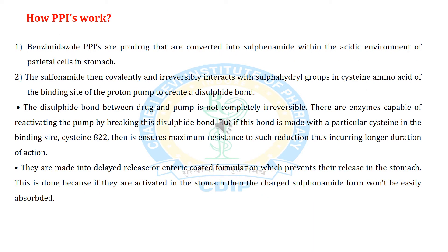How does this proton pump inhibitor work? The benzimidazole PPI prodrug is converted to a sulfenamide within the acidic environment of parietal cells in the stomach. The sulfenamide then covalently interacts with the sulfhydryl group of the cysteine amino acid at the binding site of the proton pump to create a disulfide bond. There are enzymes capable of reactivating the pump by breaking this disulfide bond. But if this bond is made with cysteine 822, it ensures maximum resistance to such reduction, incurring a longer duration of action.